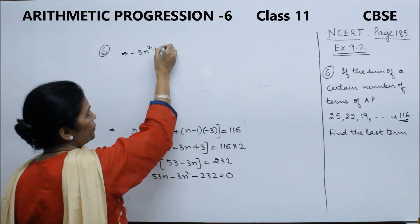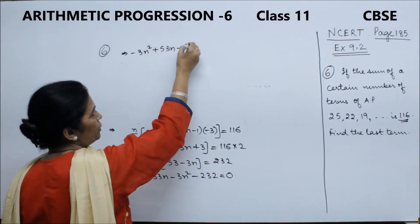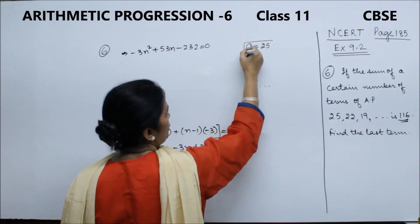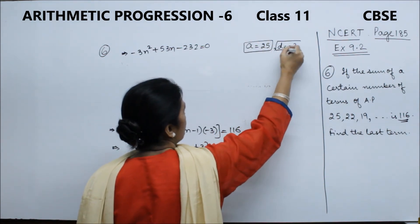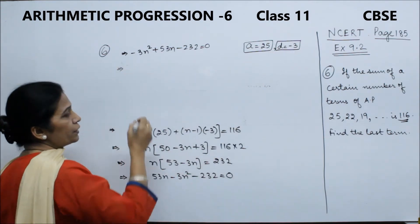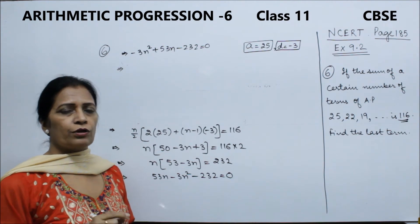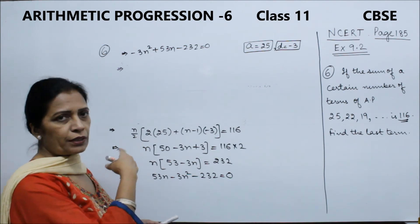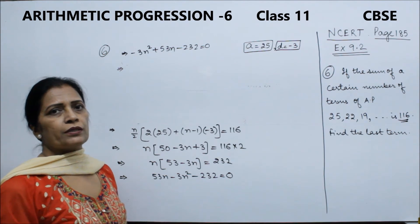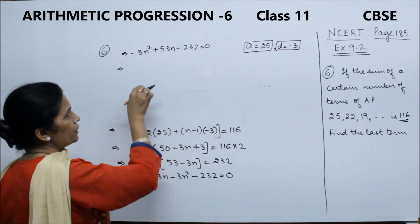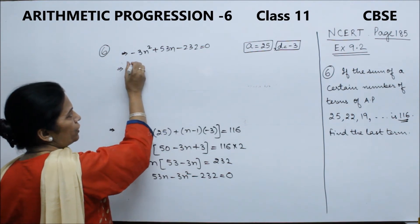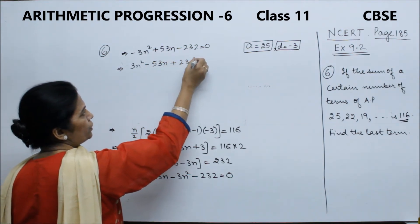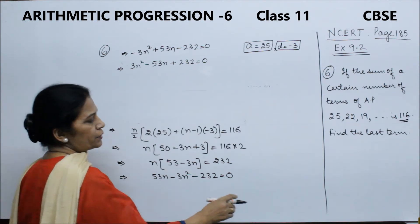Now we open the bracket: 53n minus 3n square, and this will also shift, minus 232 is equal to 0. Now we will write this equation in the proper form. In the proper form we have minus 3n square plus 53n minus 232 is equal to 0. Throughout sign change - so we have 3n square positive, minus 53n, plus 232 is equal to 0.